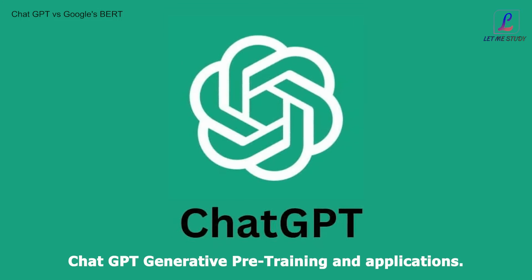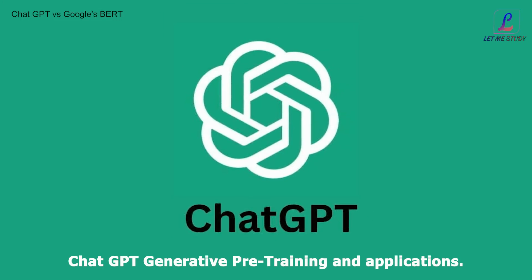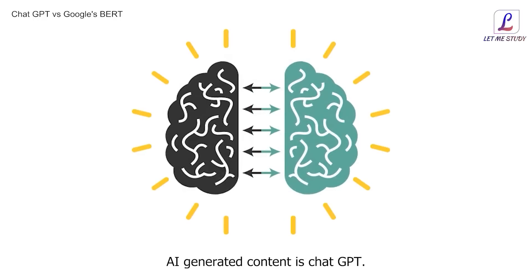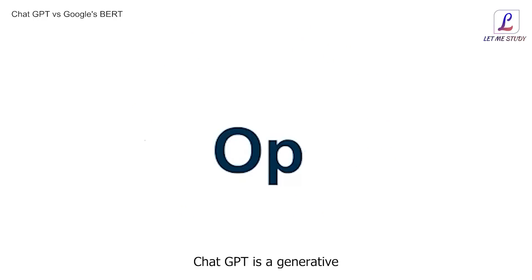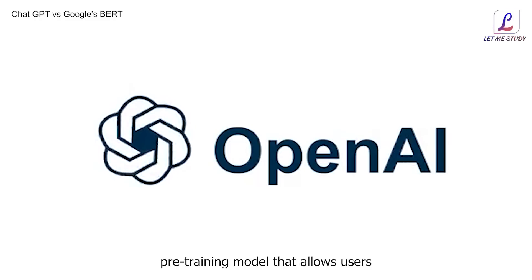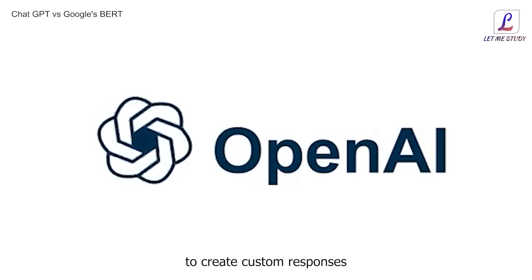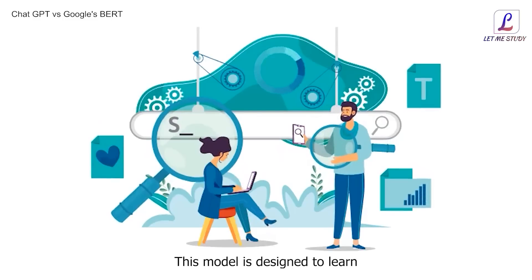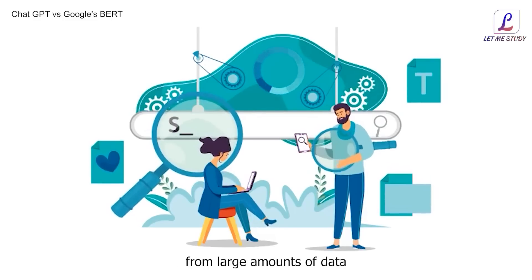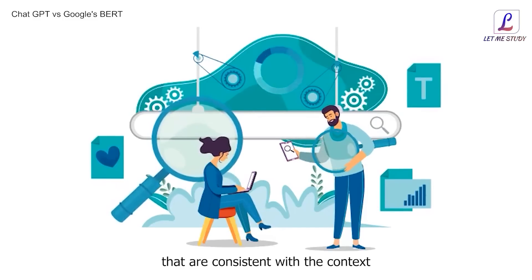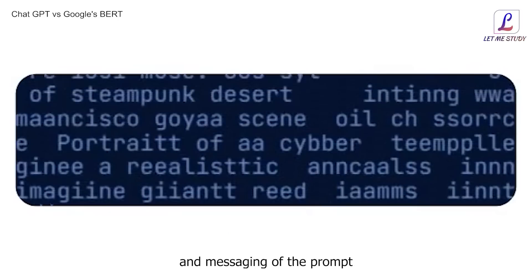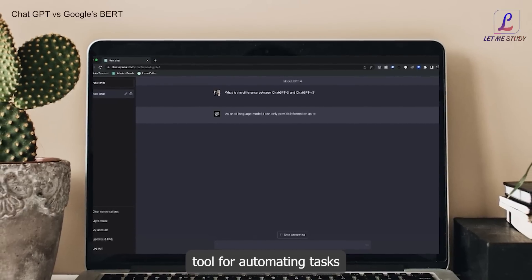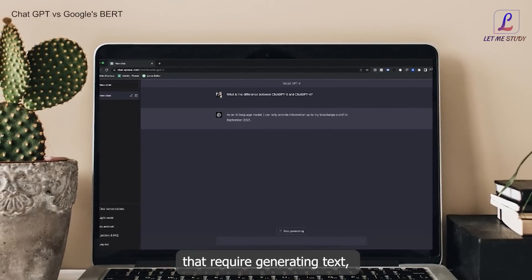One of the most exciting developments in the world of AI-generated content is ChatGPT. ChatGPT is a generative pre-training model that allows users to create custom responses to prompts and queries. This model is designed to learn from large amounts of data and generate answers that are consistent with the context and messaging of the prompt. ChatGPT is an excellent tool for automating tasks that require generating text.